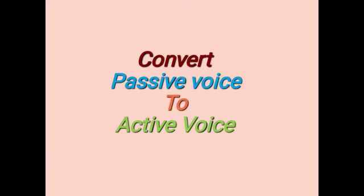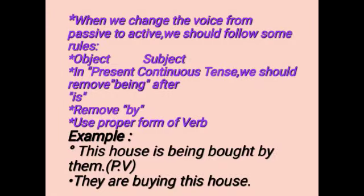Now we will convert passive voice into active voice. There are some rules. When we change the voice from passive to active, the first rule is: object changes into subject. In present continuous tense, we should remove 'being' after 'is'. We also have to remove 'by', and use the proper form of the regular verb.